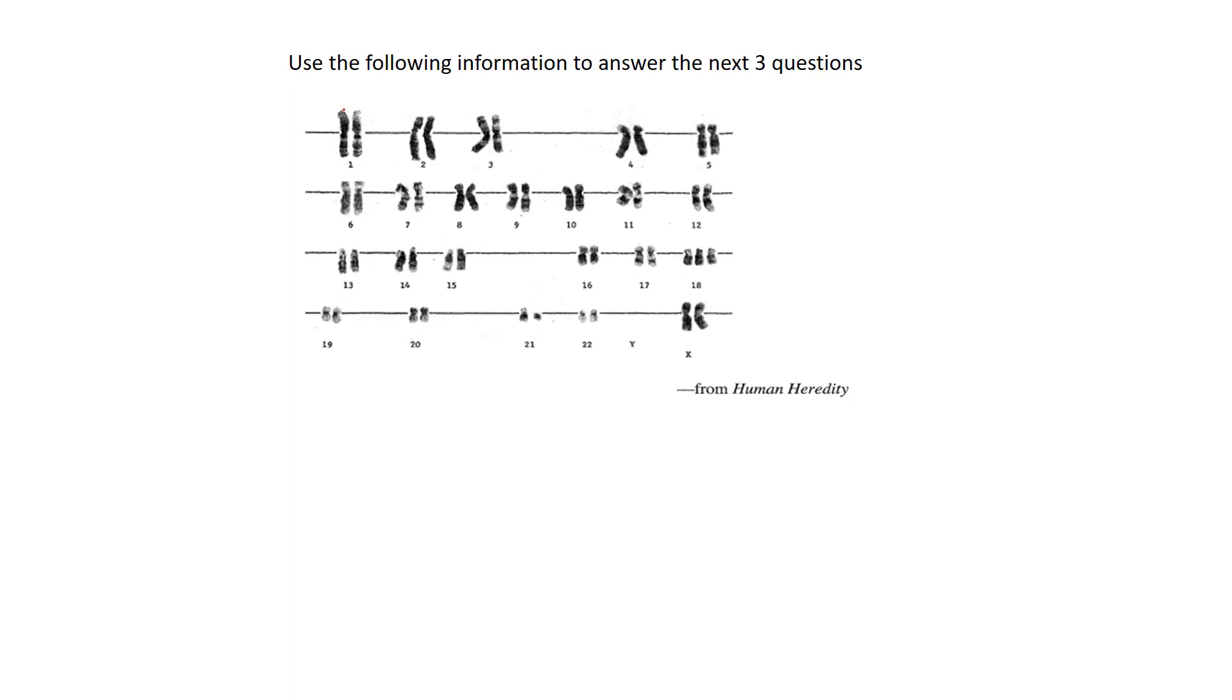The thing that might throw you off is sometimes the chromosome shows up like this where you can distinctly see the two sister chromatids. Or sometimes they show up just looking like one chromatid, just the way the dye showed in the picture. But nonetheless, all karyotypes will show homologous pairs. They are arranged by size.